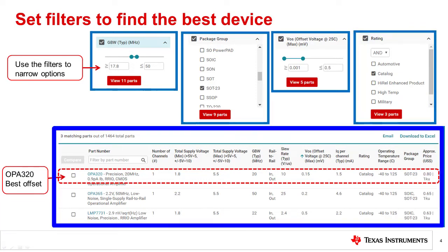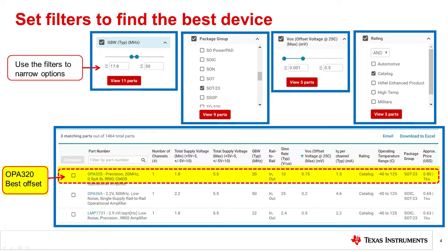At this point, the number of choices is limited to three devices. We select the OPA 320 for our design as it has the best offset.